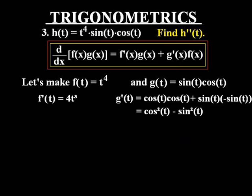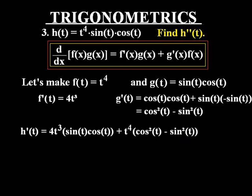Basically, that just means that we're going to need to do the product rule within the product rule, which is really not that big of a deal. So we find that f prime of t is equal to 4t cubed, and g prime of t is equal to cos of t cos of t plus sine of t multiplied by negative sine of t, which simplifies out to cos squared of t minus sine squared of t. So at this point, we have pretty much everything we need, and we're ready to finish this off.